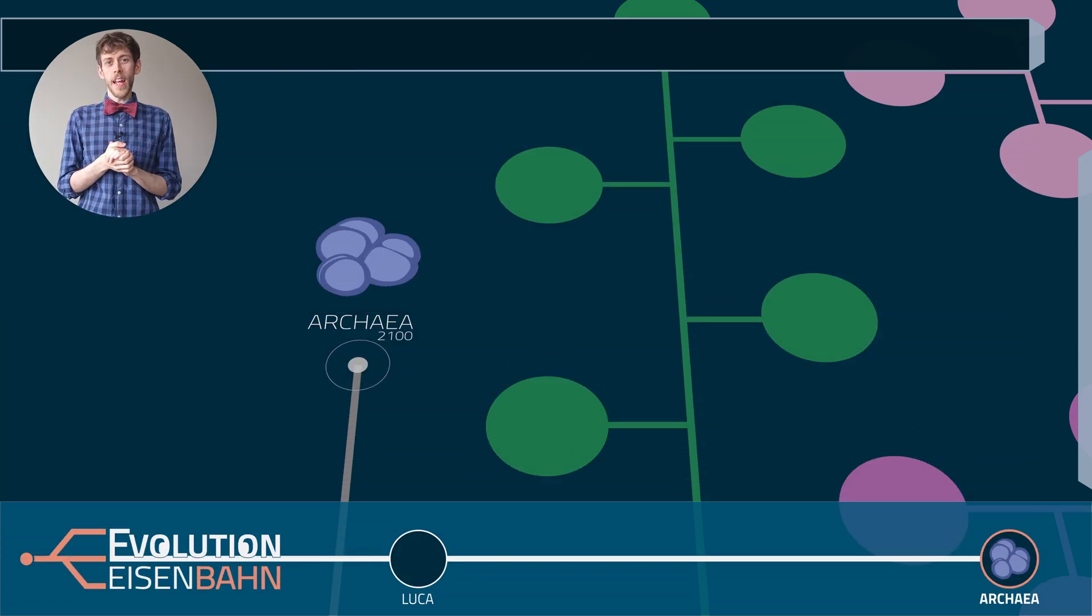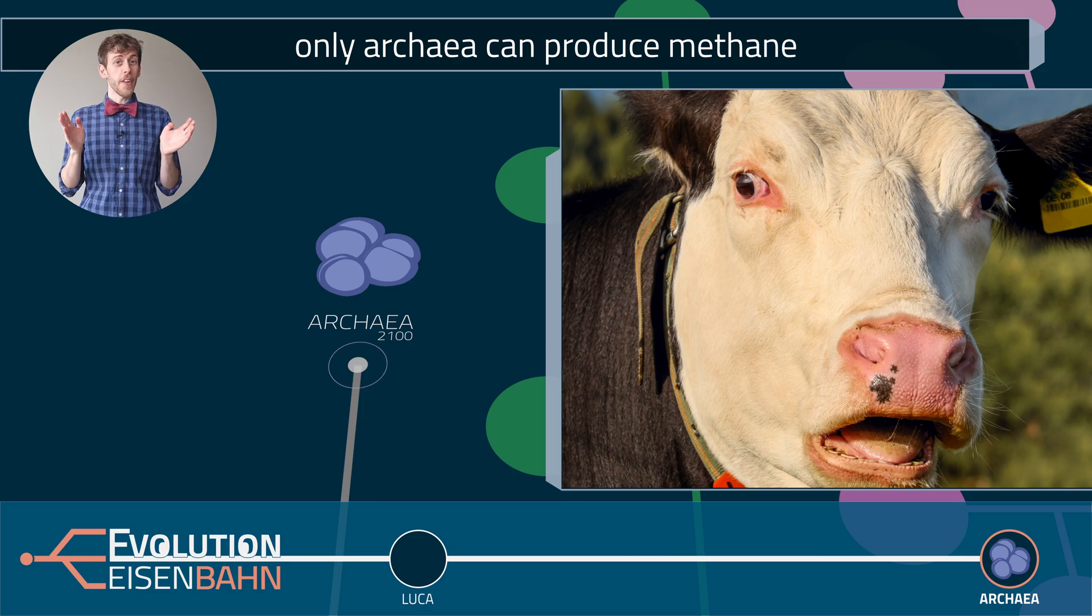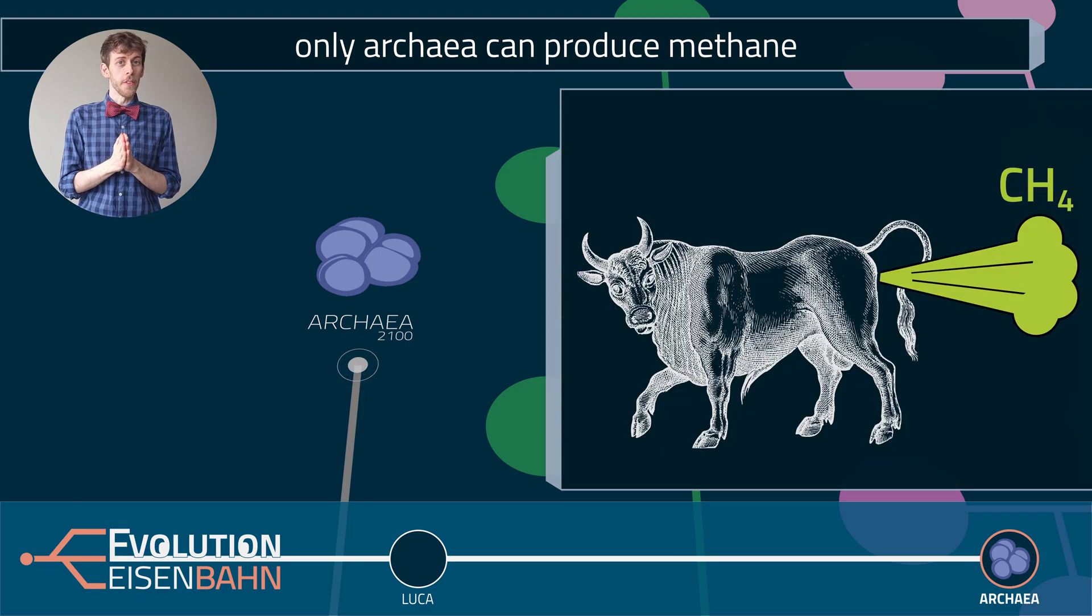And you have probably heard that animals produce methane, right? There's a lot of discussion, for example, about methane-rich cow burps and their contribution to climate change, because methane is a strong greenhouse gas. But did you also know that archaea are actually the only organisms on this planet that can produce methane? That's right, all the methane in the cow burps and also in your own farts is produced by archaea in the gut. No bacterium can do it. It's all them.